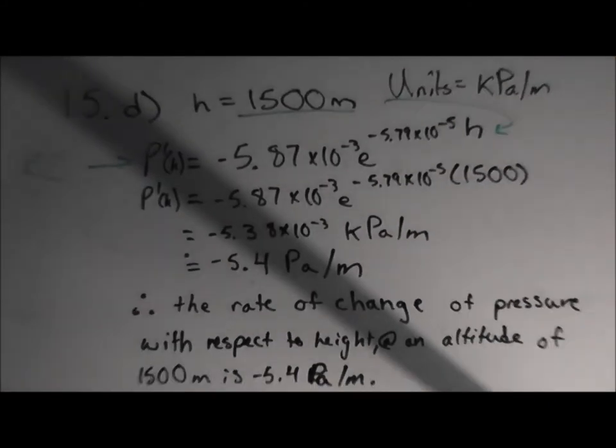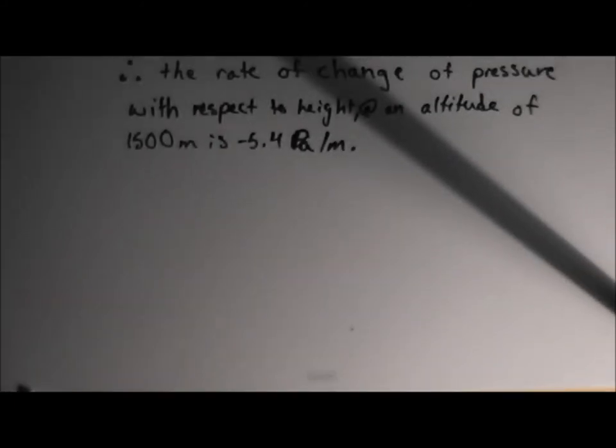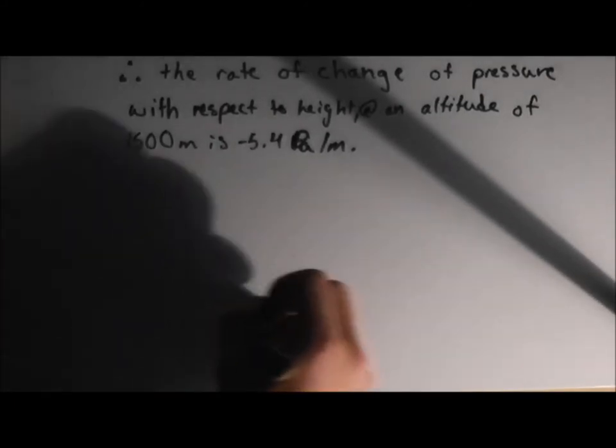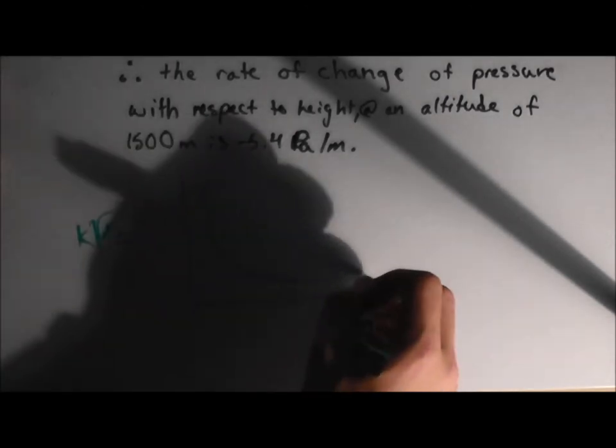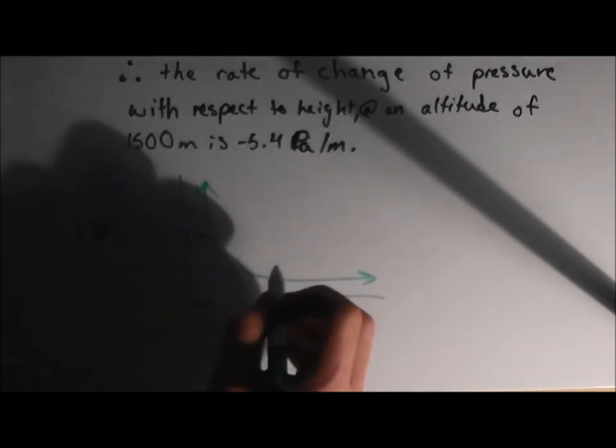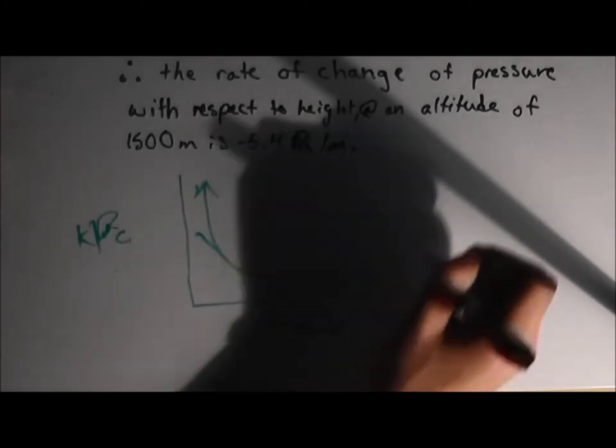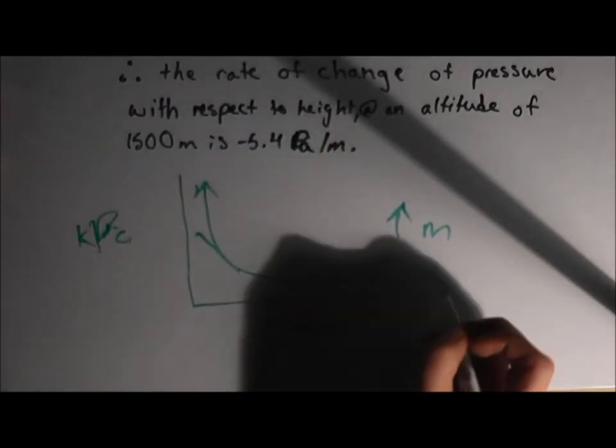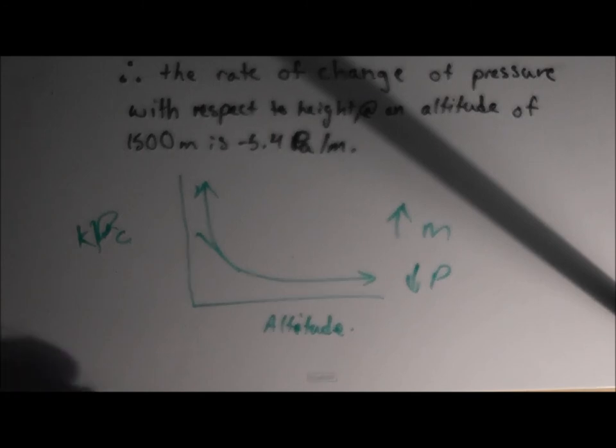Now, with this, we can draw an illustration of what is going on here. We now know that our graph is going to be going like this, giving us negative rates of change down. So, it's always going to be decreasing, so the higher you get, higher meters decrease in pressure. And that's the conclusion we can draw from this question.